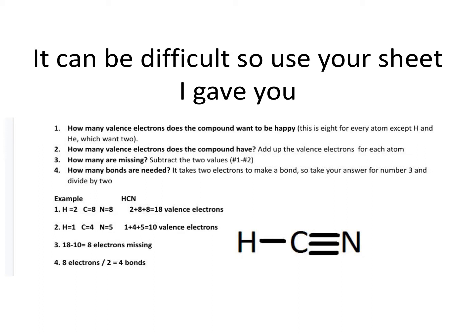The first step is: how many valence electrons does the compound want to be happy? We already know that every single element wants to meet the octet rule — that means eight for every atom — and then hydrogen and helium of course only want two. So we're going to look at the compound before we draw the Lewis structure and just add up. One wants eight, another wants eight, so that's going to equal 16. We'll look at the example down below.